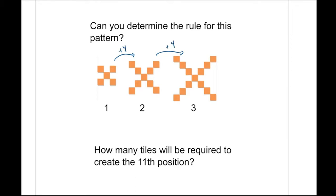We might also see that if I look at my pattern, I can see that I'm adding four squares onto the corners here, and those are continuing out in each position. So from here you could determine that this increase of four, this change of four, this addition of four little squares in each position number, represents my multiplier.